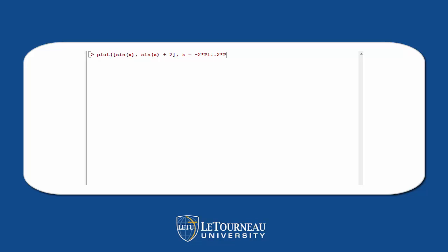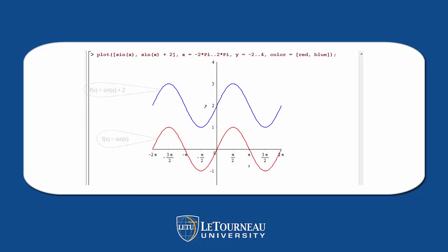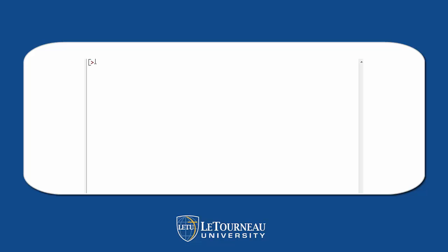We'll give it a moment to come up with its graphs. There is a vertical transformation. Let's plot another one — sine of x plus pi over 2.